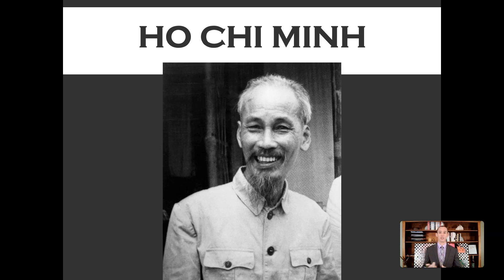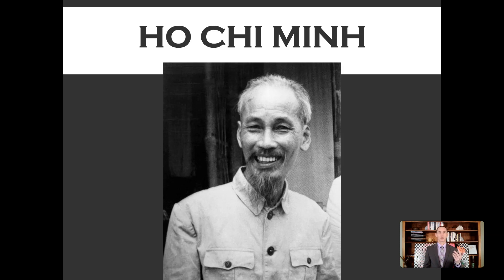Ho Chi Minh even had souvenirs from the American Revolution. The Declaration of Independence that Vietnam writes has so much of it taken directly from the US Declaration of Independence. The first country Ho Chi Minh went to for assistance was the United States. However, the United States was allies with France, so it would not help Ho Chi Minh. As happens over and over again, once he could not get assistance from the US, he went to the Soviet Union — and all of a sudden, the United States got very interested in Vietnam. Now it was seen as part of the Cold War, as an issue of spreading communism.